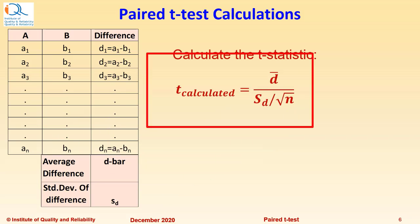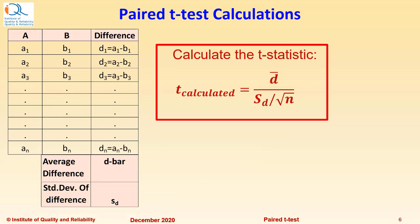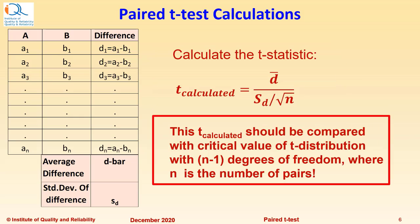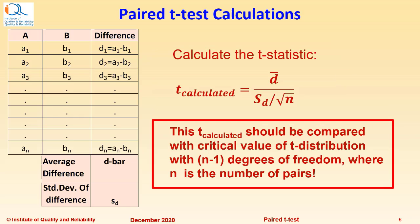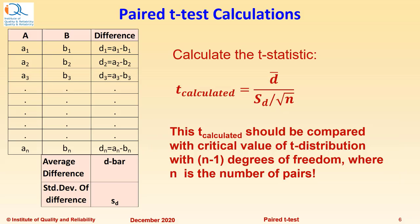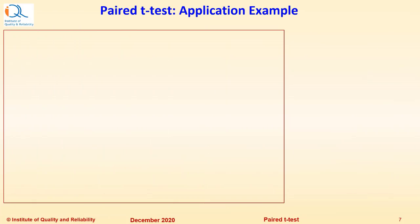Having calculated these two values, we can now estimate the t statistic and that can be calculated as d̄ divided by sd divided by square root n, where n is the number of pairs in the data. This t calculated should be compared with critical value of t distribution with n-1 degrees of freedom, where n is the number of pairs.